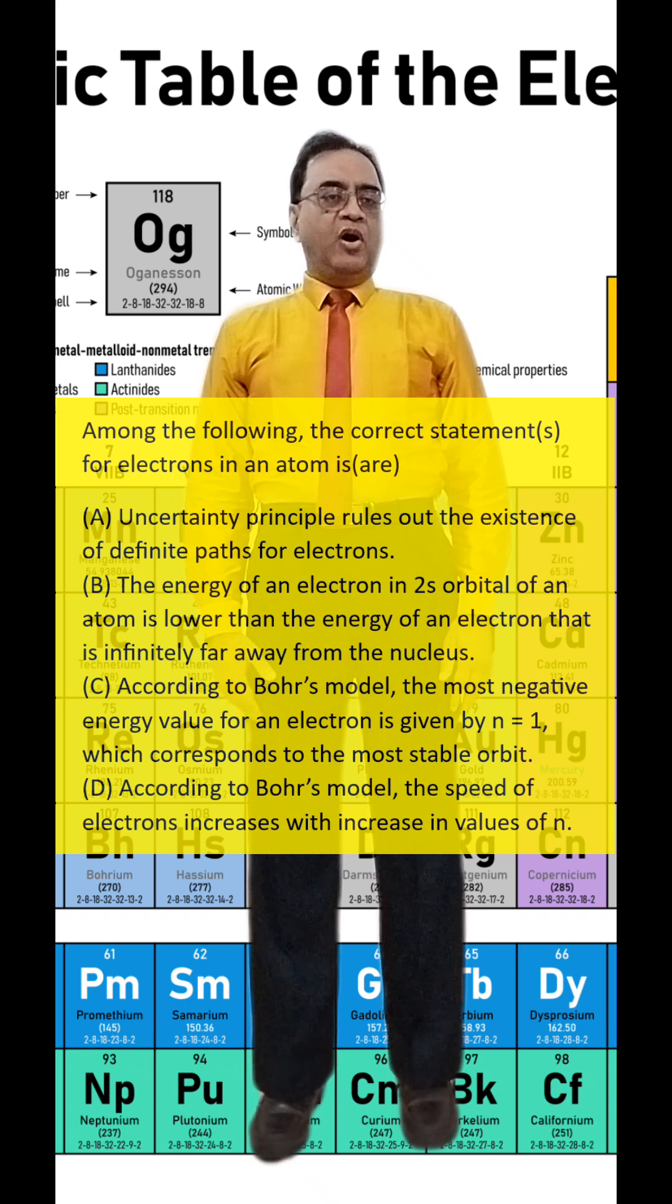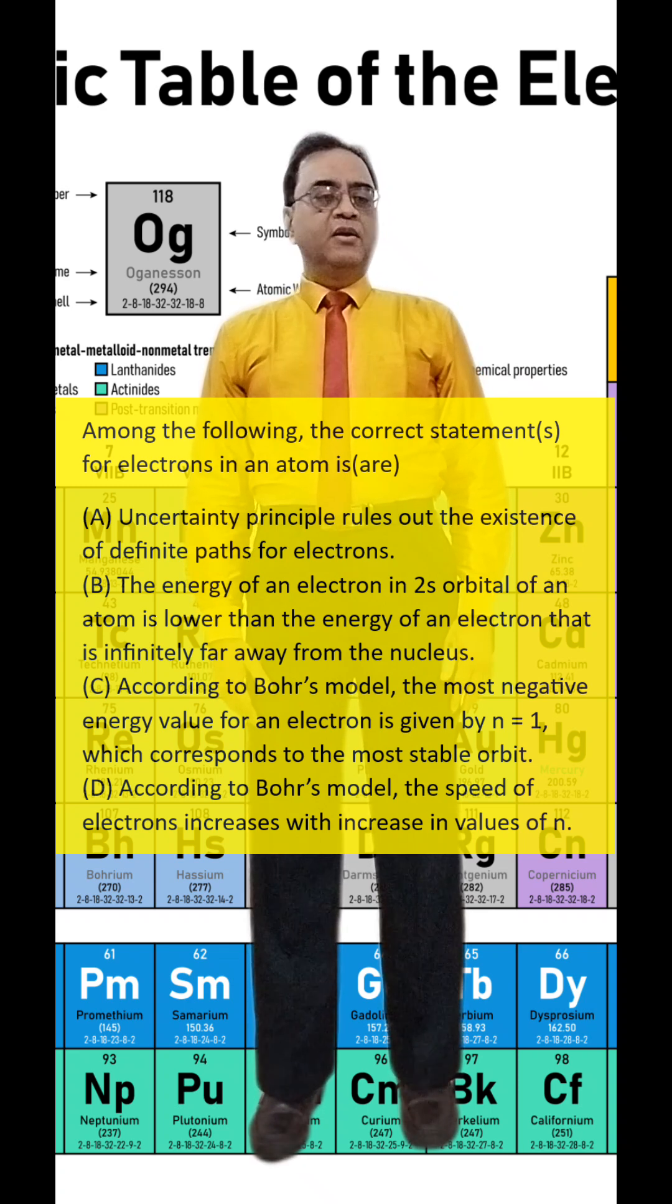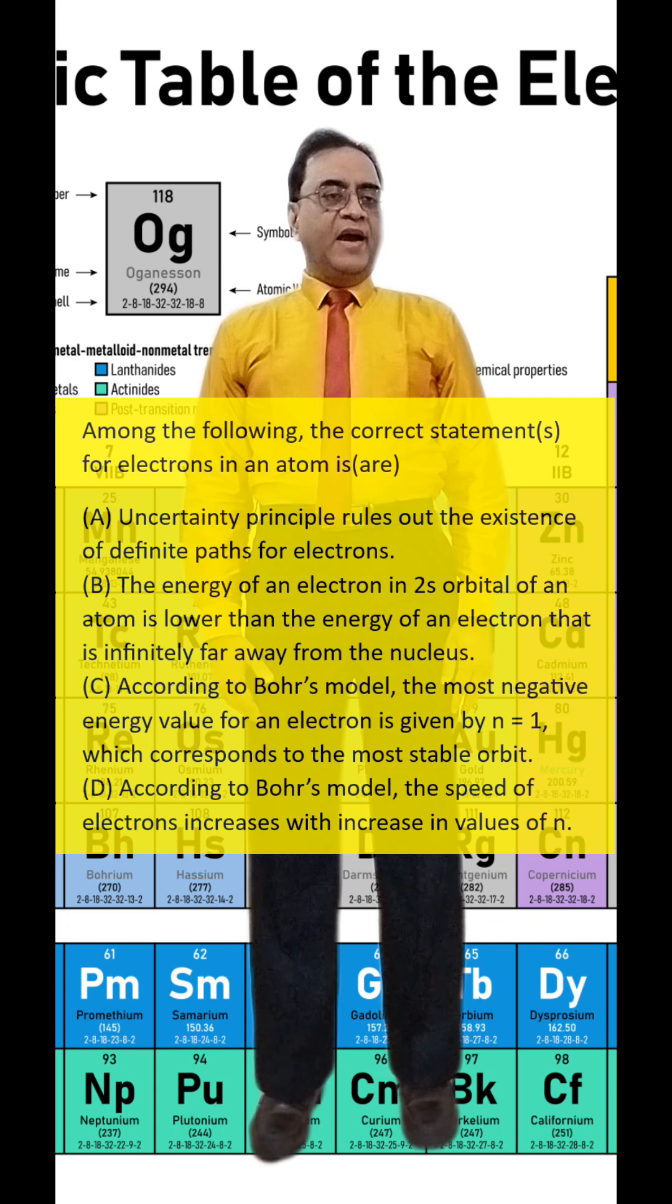The energy of an electron in 2s orbital of an atom is lower than the energy of an electron that is infinitely far away from the nucleus.